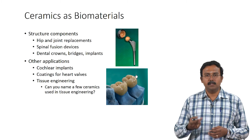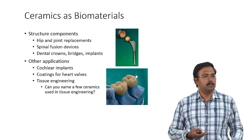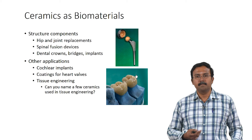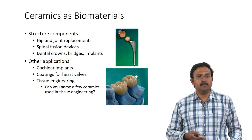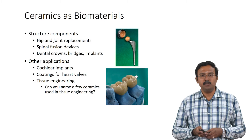Ceramics are used in structural components like hip and joint replacements — not completely, since they are brittle, but as coatings or to help in cell infiltration. Spinal fusion devices can also be ceramic materials, as can dental crowns. If you undergo a root canal you would get a dental crown, and ceramics can be used for that. Other applications include cochlear implants and coatings on heart valves.